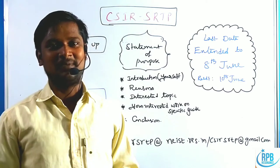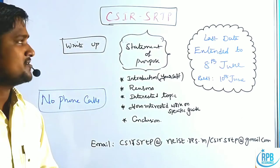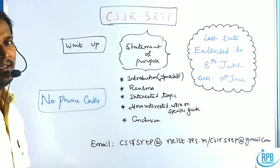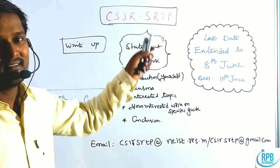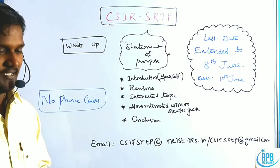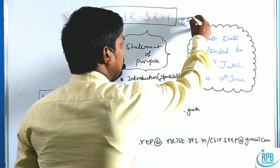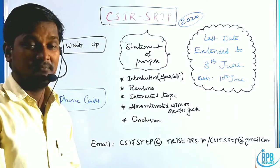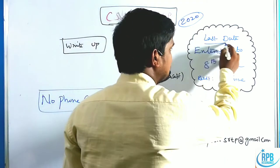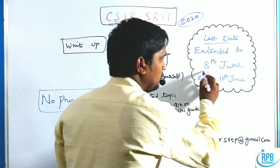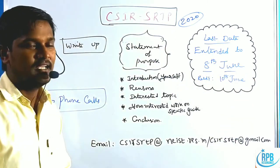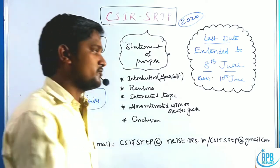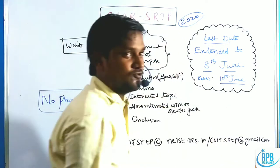Hi everyone, welcome to the RPB Resonance Commission. In this session I will give an important notification regarding the CSIR SRTP, that is the CSIR Summer Research Training Program 2020. The original online application last date is over, but they have extended the last date of online registration up to 8th June. The result declaration is also postponed to 10th June.